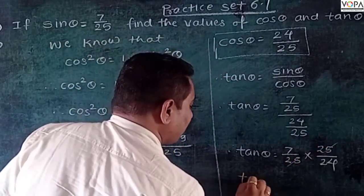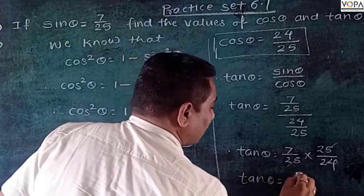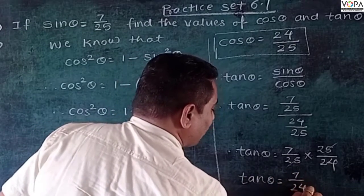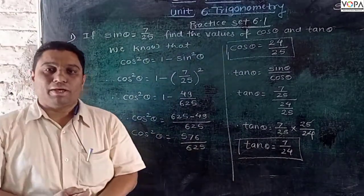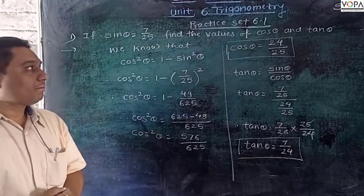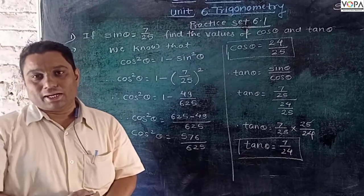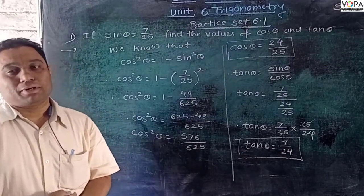So 25 and 25 get cancelled, and the value of tan θ = 7/24. So in this manner we can find out the values of cos θ and tan θ by using the identity as well as the relationship.